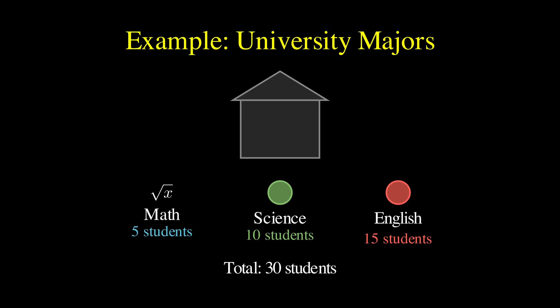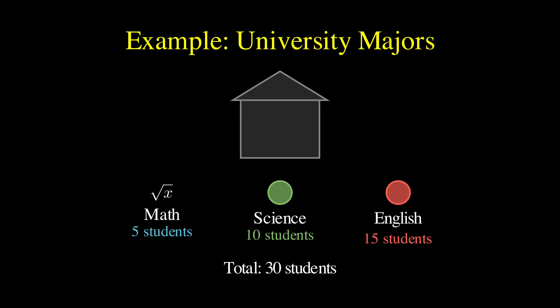But the beta distribution can't help you anymore because it only has two parameters, alpha and beta, and you need three parameters now, one for each category. This is where the Dirichlet distribution enters the scene, and it's essentially the beta distribution's more flexible sibling that can handle any number of categories you throw at it.